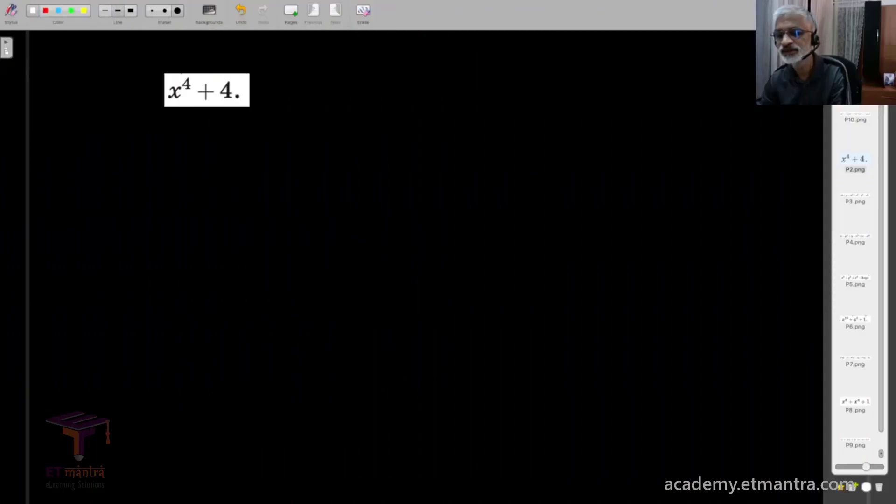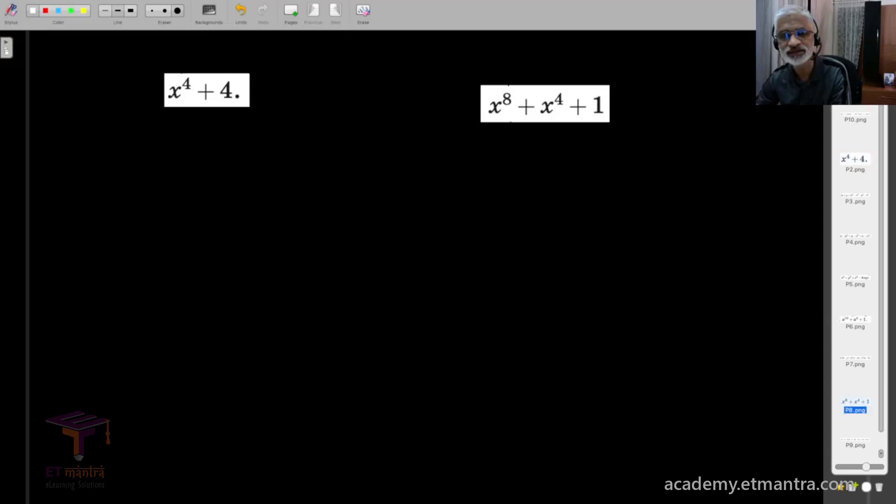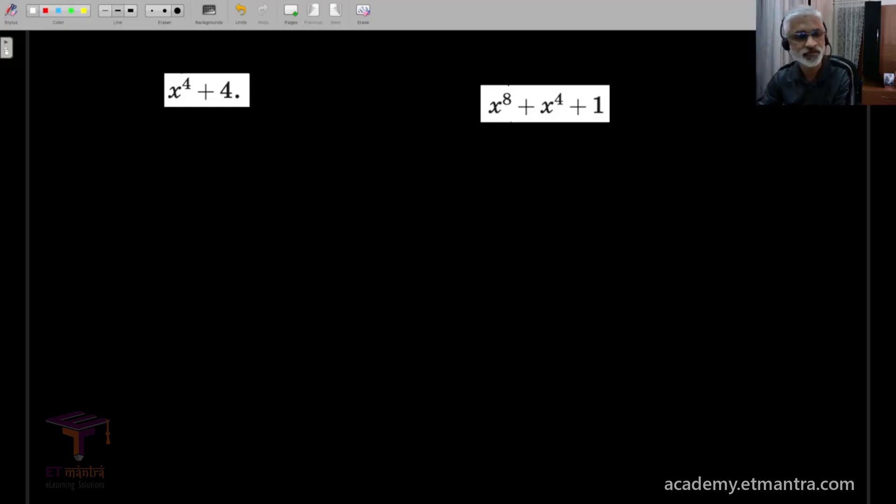These are two examples with very similar manipulations, so let's club them together and handle them. The problem is to factorize these two expressions and here, a clever addition of one term, which is completing the square, is going to help as follows.